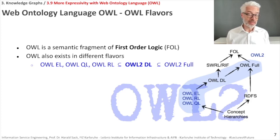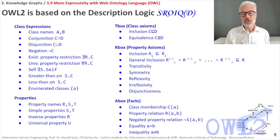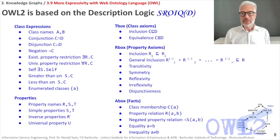We simply deal here with OWL 2 DL, which is based on description logics. Description logics is not a single logic — there are many, so we say 'description logics.' OWL is based on a single description logic with the name SROIQ(D). There are many varieties of description logics, and there is a naming convention roughly describing the operators allowed — each character in the name stands for specific operators.